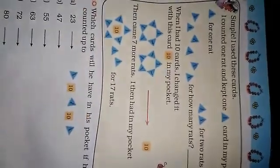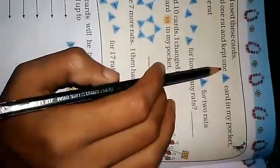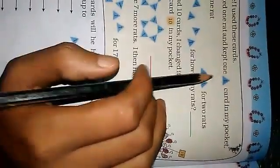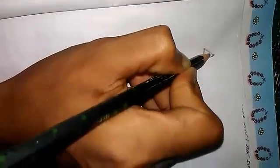But how did you count so many rats? I counted one rat and kept one triangle card. So one triangle card is for one rat.